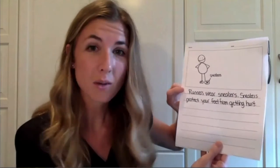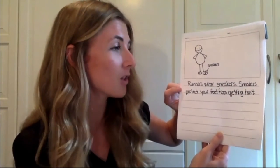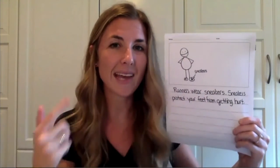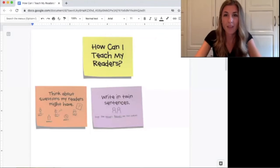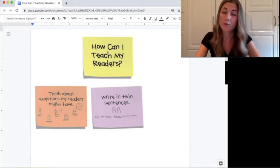Hopefully this will help you as you are answering questions that your reader might have. Sometimes when you go to answer the question, you write down the answer and then you move on. But sometimes your reader wants to know more. So instead of writing one sentence, you can write two sentences — or twin sentences. A twin is two. So here's an example. I was writing about what runners need. Runners need to wear sneakers — I could have just stopped there, but I decided to say more. I wrote a twin sentence: Runners wear sneakers. Sneakers protect your feet from getting hurt. Do you see how my answer was sneakers, and then I wrote another sentence about sneakers — I said a little bit more about it.